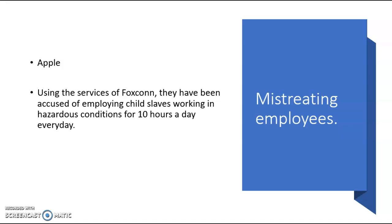The third example of unethical behavior is Apple. Apple actually mistreats their employees — somewhat indirectly, but regardless it's still happening. Basically, Apple uses a service called Foxconn, another company that makes the iPhones. Foxconn has been abusing employees — child slaves — working in hazardous conditions for over 10 hours a day, every day. This goes to the mistreating employees factor and is both a physical and mental unethical dilemma within this business.